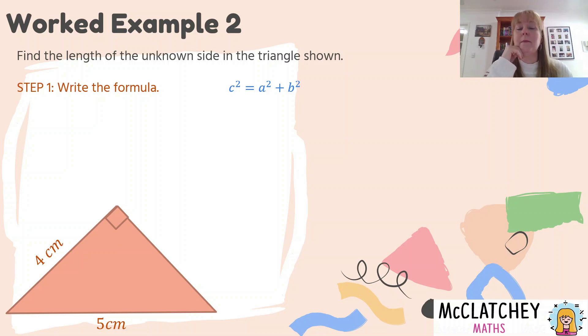Now sometimes textbooks and exams will get really tricky and they will label the triangle for you in advance and they will call one of the smaller sides c. You are welcome to cross that out and change the hypotenuse to c. Alternatively, if they've given you different letters on the sides of the triangles, you can substitute those new letters into the formula, but you've just always got to remember the hypotenuse is c.